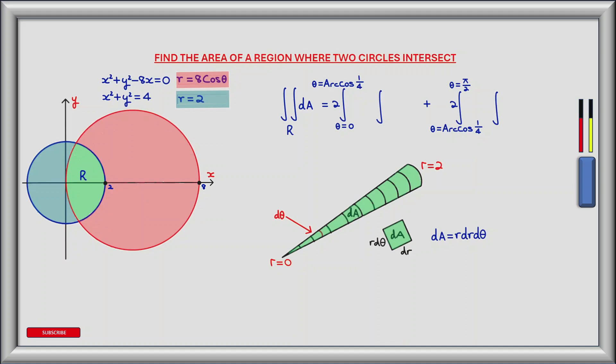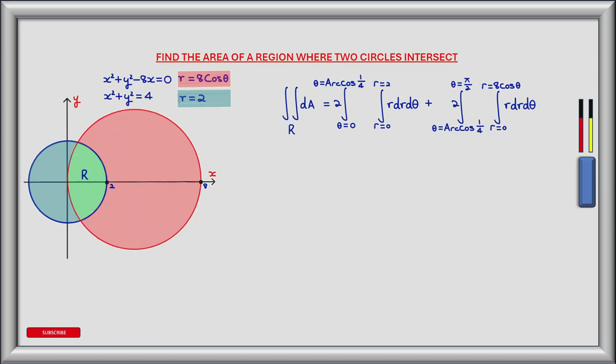When we integrate in the r direction, our first integral begins at the origin where r equals zero, and is governed by the blue circle which extends to r equals two. When we move past the intersection point, the red circle comes into play and each sector extends from r equals zero to r equals 8 cos theta. The first inner integral has a lower limit r equals zero and an upper limit r equals two, integrating r dr d theta.